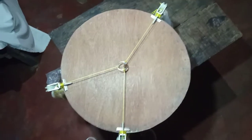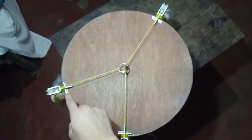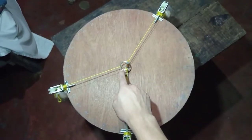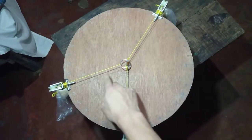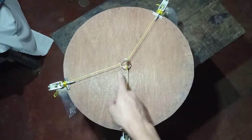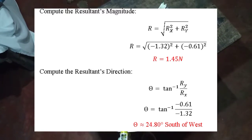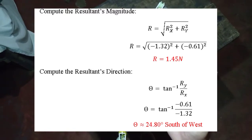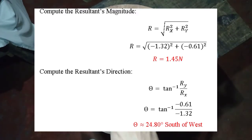And now, we are going to determine the resultant. We can see that the ring pushes here. And if we calculate, here are the calculations for the resultant's magnitude: 1.45 newtons and 24.8 degrees south of west.